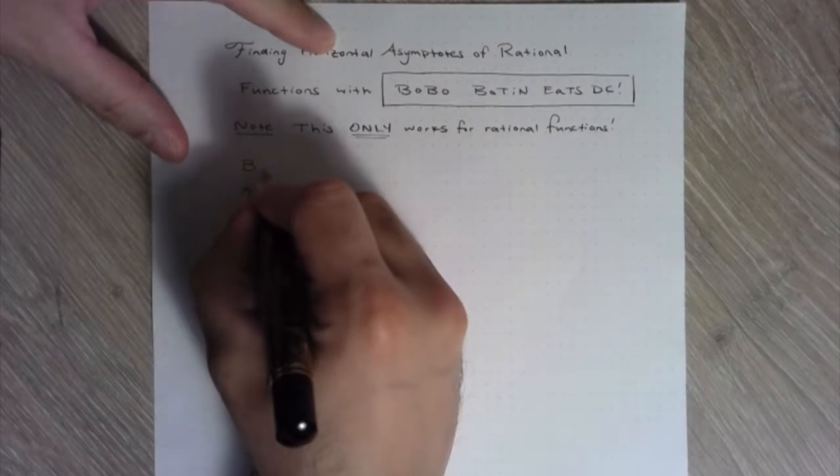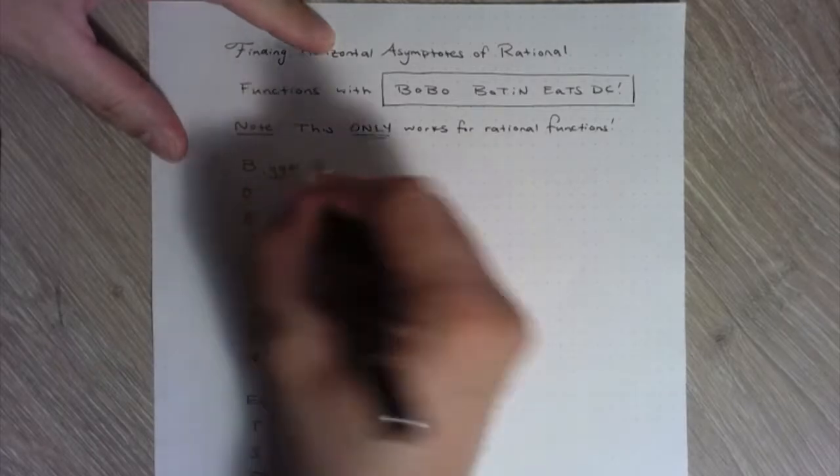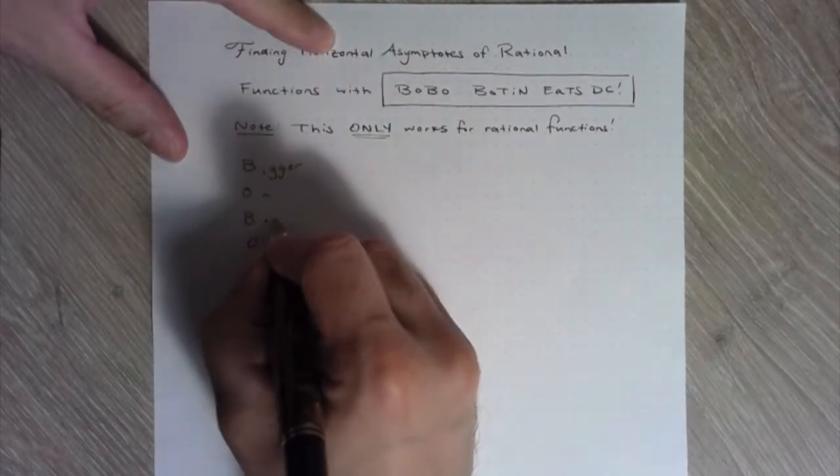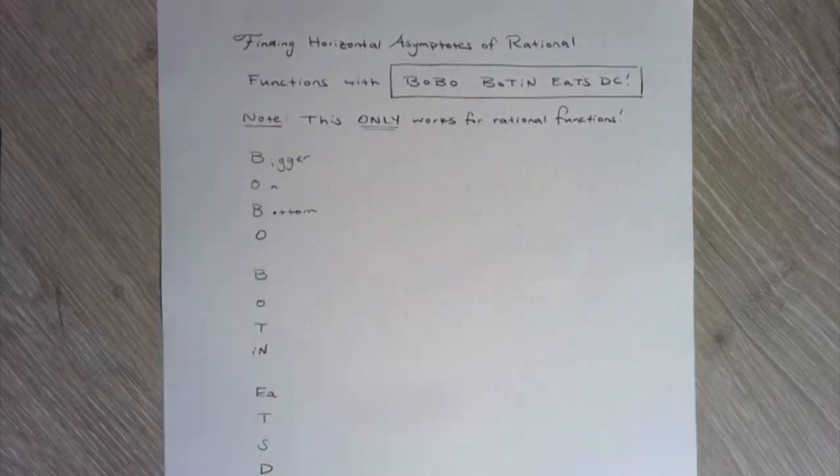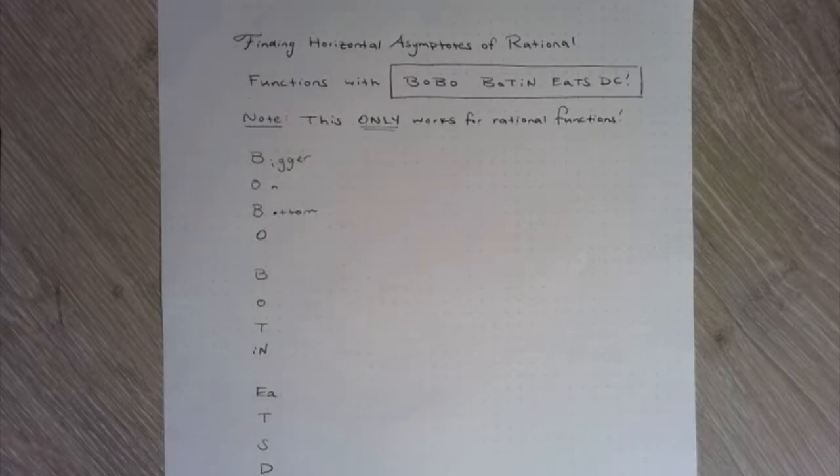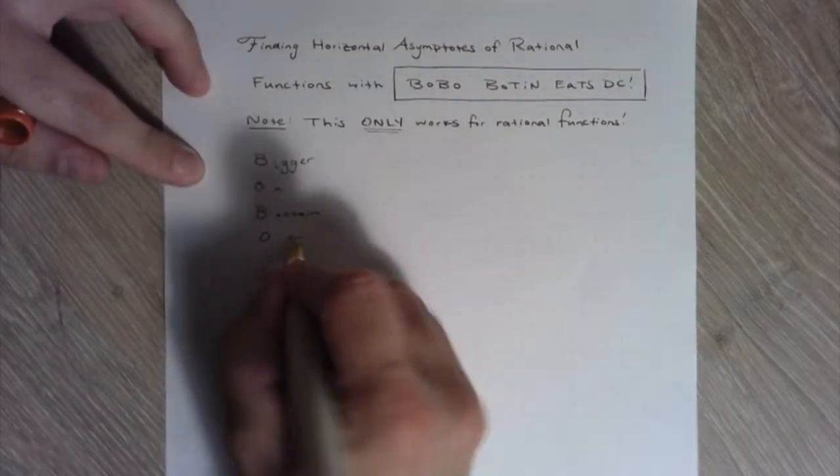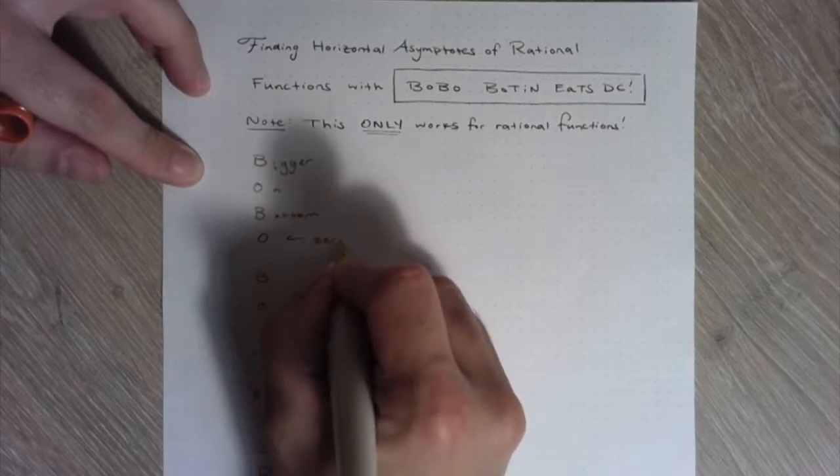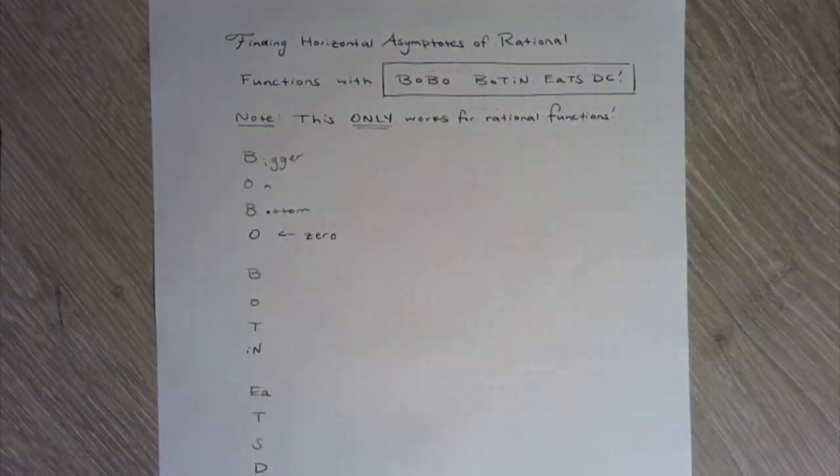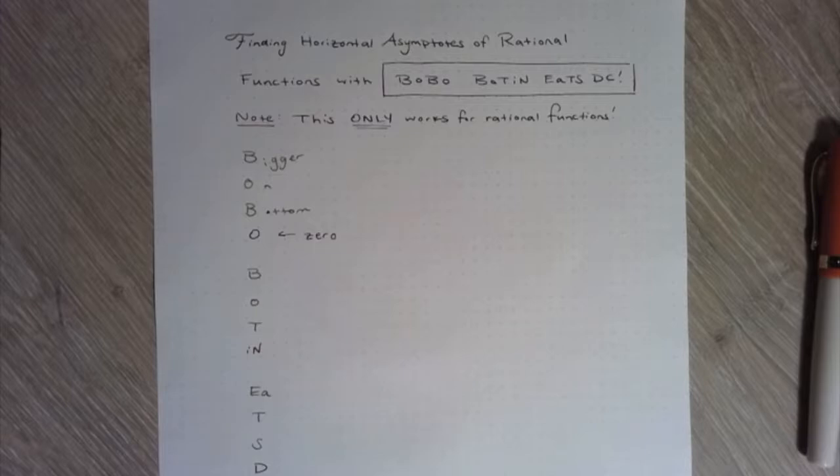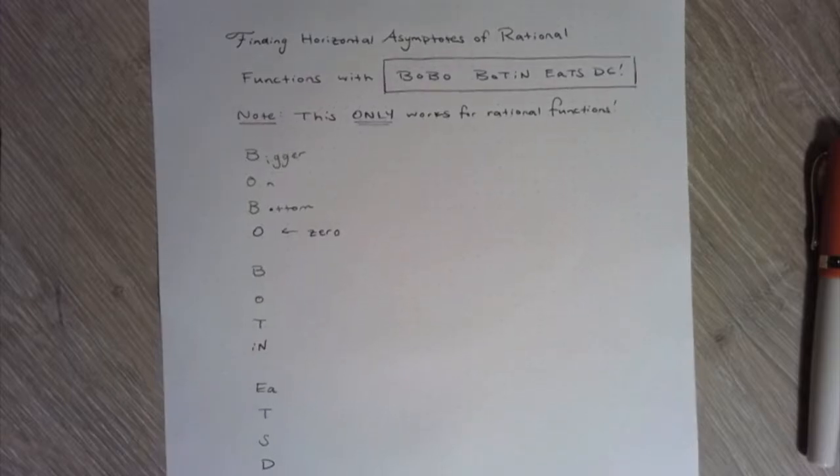So Bobo, so bigger on bottom, that means that it goes to zero. So that's the Bobo part. So bigger on bottom goes to zero.